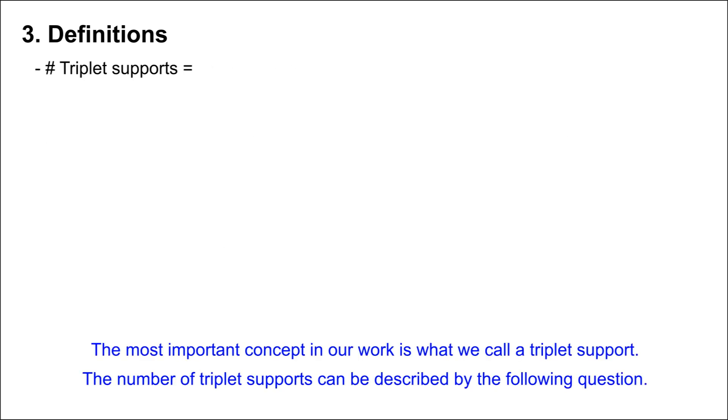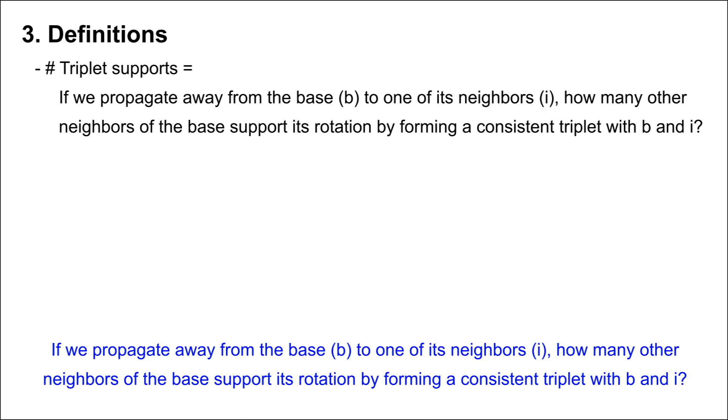The most important concept in our work is what we call a triplet support. The number of triplet supports can be described by the following question: If we propagate away from the base B to one of its neighbors I, how many other neighbors of the base support its rotation by forming a consistent triplet with B and I?